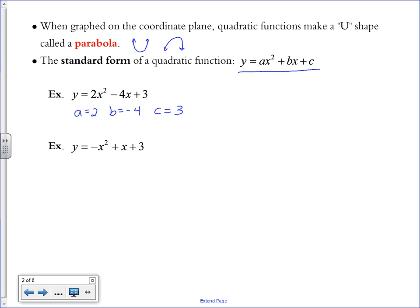And the other thing to establish is that whether the U goes up or down is all based on the A, the value of A. So if our A is positive, then our U is going to look something like this. It's going to be a right side up U. Our parabola is going to be opened up.